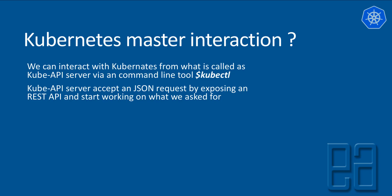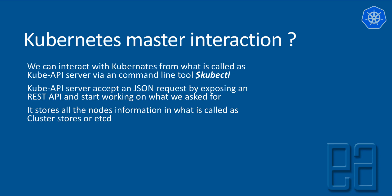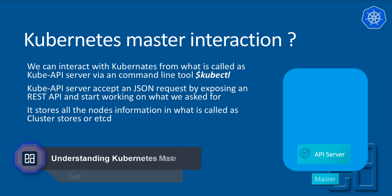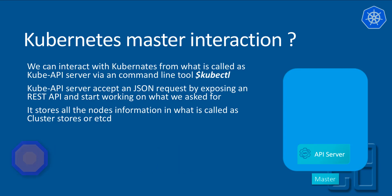The kube API server accepts JSON requests by exposing a REST API and starts working on what we asked for. It stores all the different node information in what is called the cluster store or etcd — that's where all the information is stored for all the different nodes. So the API server is basically the one place we talk with via the kubectl command line utility.